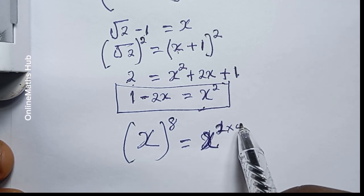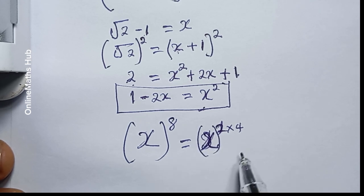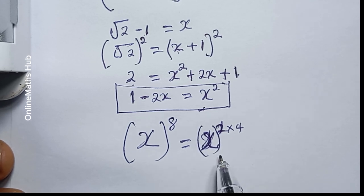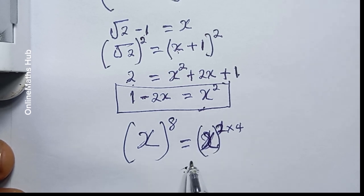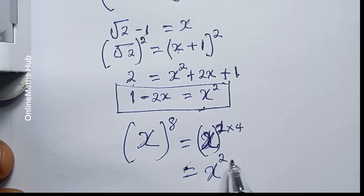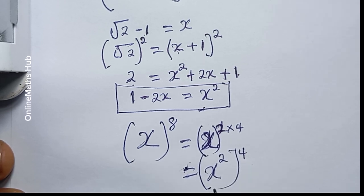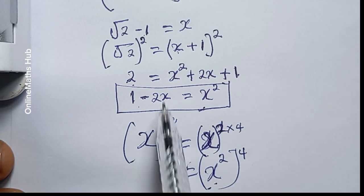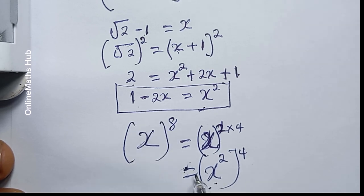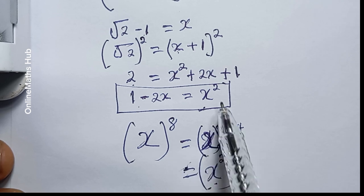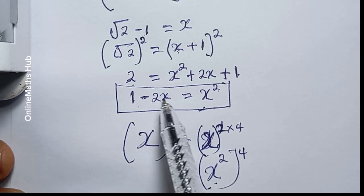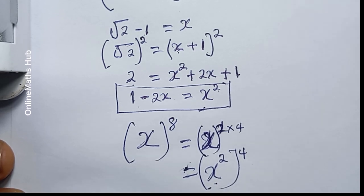I can split 8 as 2 multiplied by 4, so that gives me x squared all raised to power 4. Now I've got this x squared, so I'm going to go ahead and replace x squared with 1 minus 2x.